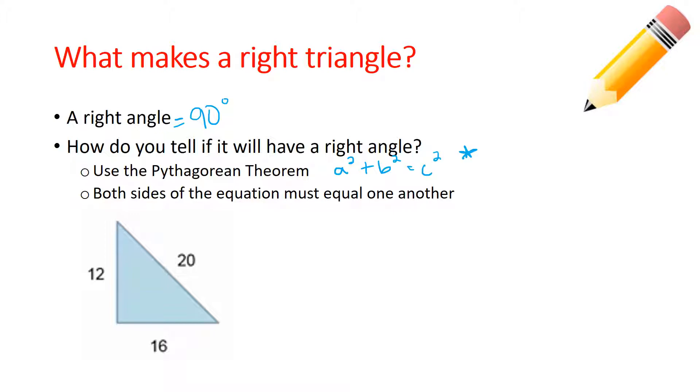This is a super important theorem that you want to remember for the rest of your math career. If it's a right triangle, if I have a right angle, that means both sides of the equation must equal the hypotenuse. So how this works...